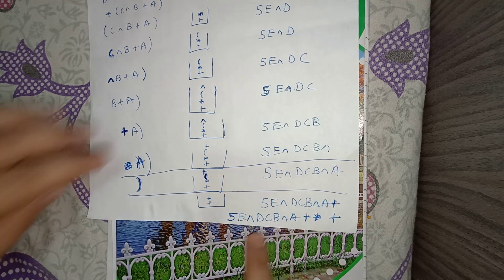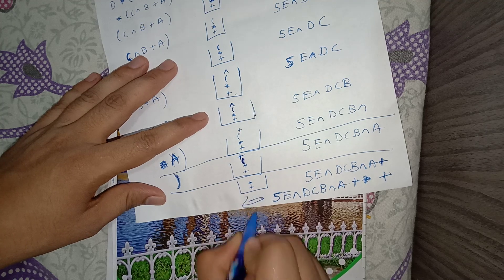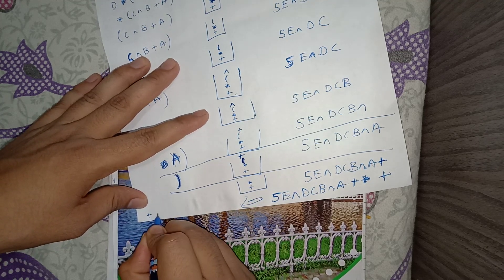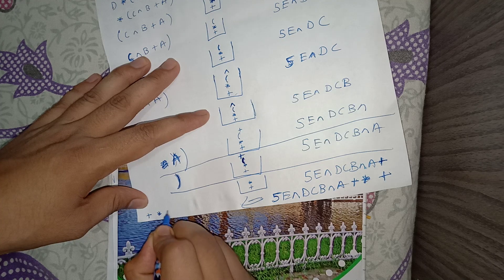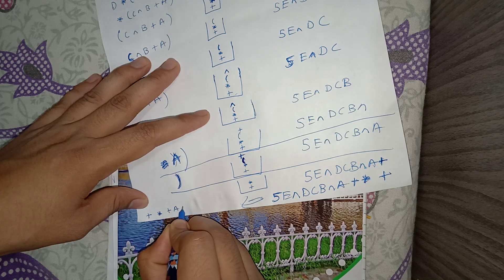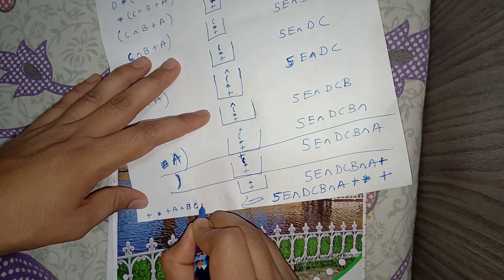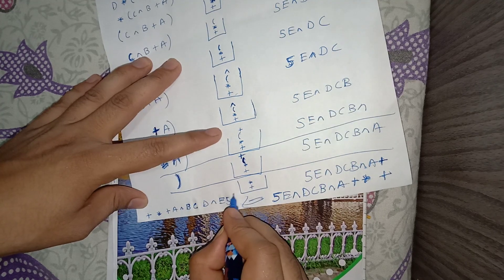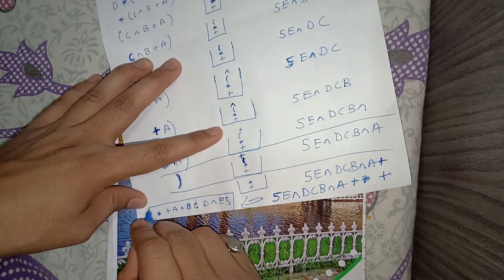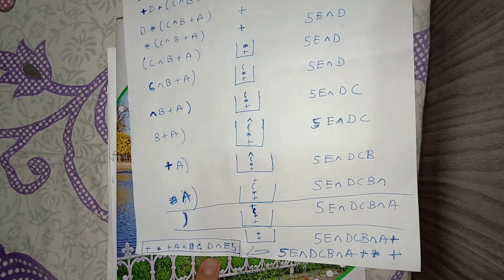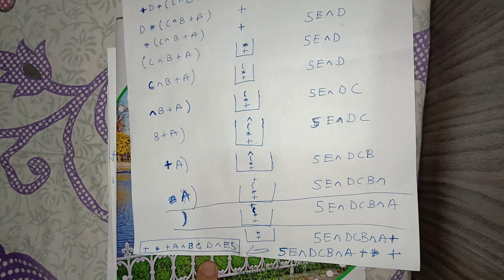The final step is to reverse this postfix expression. On reversing, we get: plus, multiplication, plus, A, XOR, B, C, D, XOR, E, 5. This is our final answer — the prefix form of the original infix expression.